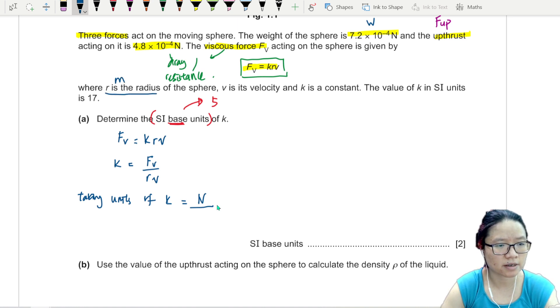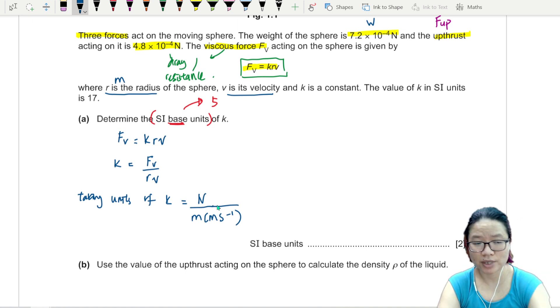Taking units of K, this will be force is Newton over r is radius in meters, and v is velocity in meter per second. Is this your final answer? No. Is this SI unit? Yes. Is it SI base unit? No. This is not SI base, so we need to convert F or Newton.